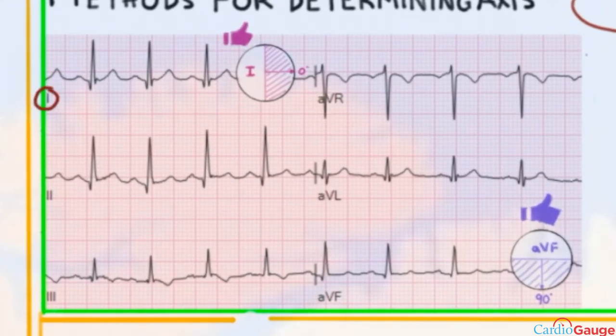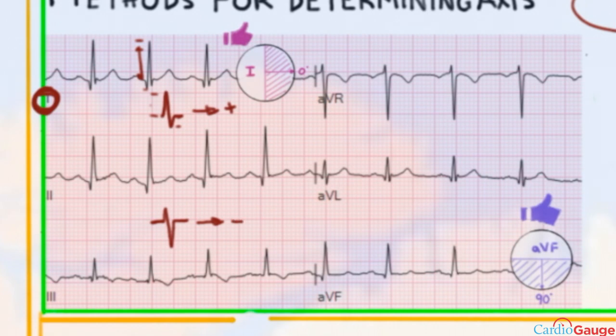So if lead one, when you're looking at the axis, lead one, if that's positive, and this is positive here, because the up is a lot more than the down, this is how you determine the overall net vector, if it's positive or negative in a given lead. So if the up is more than the down, as it is here, then this is positive. If the down is more than the up, then that's negative. And it doesn't matter which comes first, the positive or negative part. So if it looks like this, that's negative. And if it looks like this, then that's positive.